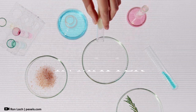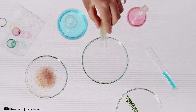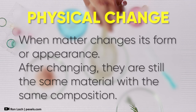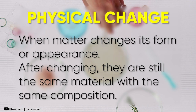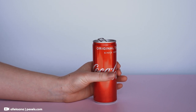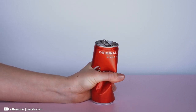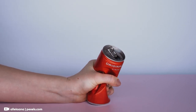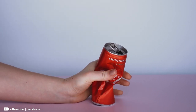What exactly is a physical change? Simply put, a physical change is when matter changes its form or appearance, but the substance itself stays the same. Although they look different after changing, they are still the same material with the same composition.